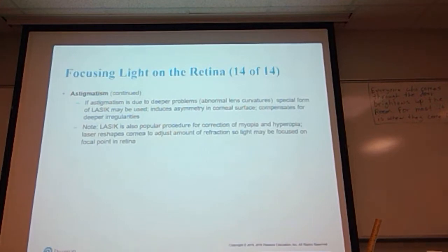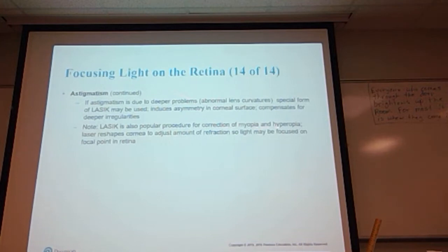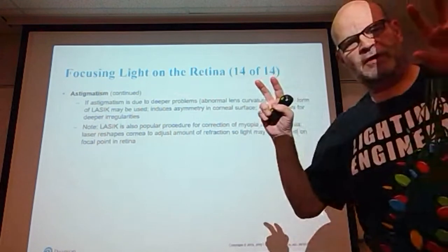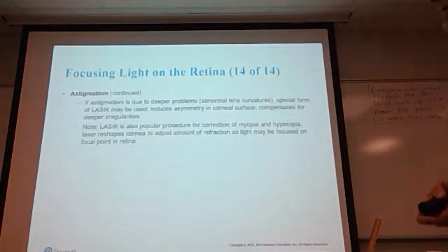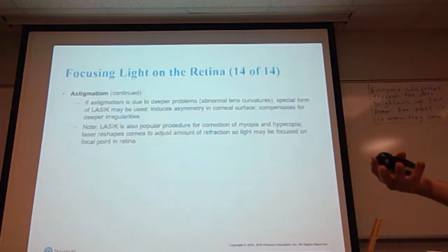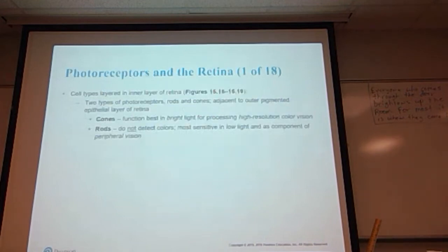People with severe astigmatism should be aware that if the astigmatism involves other structures beyond the cornea, LASIK surgery may help but will not cure the condition. If the astigmatism is due to deeper problems such as abnormal lens curvatures, special forms of LASIK may be used, but that induces asymmetry into the corneal surface to compensate for deeper irregularities. LASIK is also a popular procedure for correction of myopia and hyperopia — the laser reshapes the cornea to adjust refraction so light is focused on the retina. Essentially, they're reshaping the cornea to act like a pair of glasses.